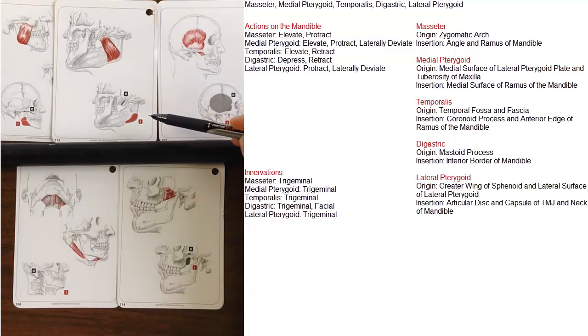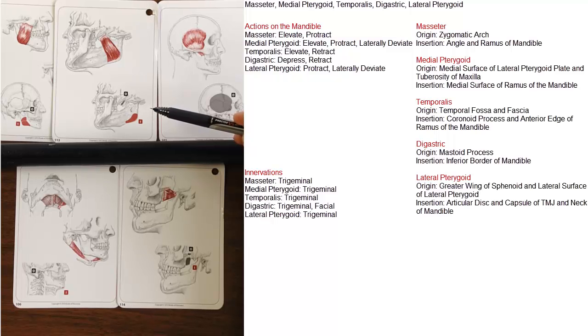The medial pterygoid: its origin is on the medial surface of the lateral pterygoid plate and the tuberosity of the maxilla. It inserts on the medial surface of the ramus of the mandible.